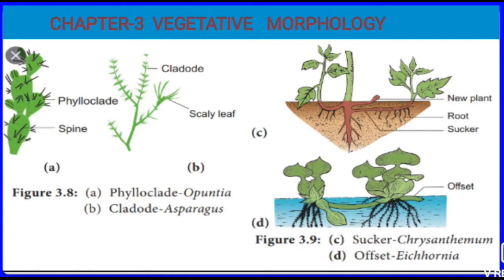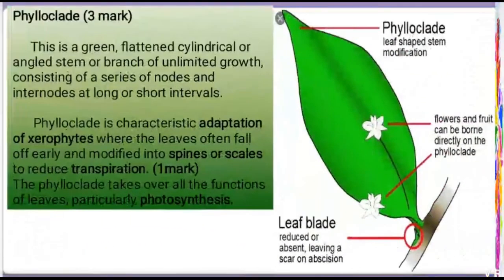The first topic is phyloclad, with a good example being Opuntia. The second is cladode, with a good example being Asparagus. The good example for sucker is Chrysanthemum, and for offset it is Eichhornia. The next slide on phyloclad is very important — expect three more questions.